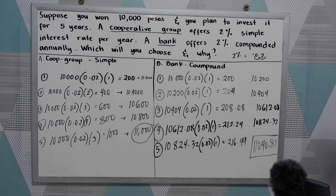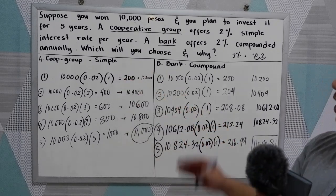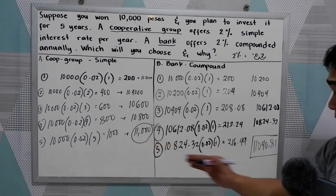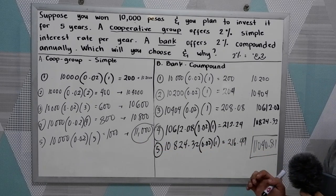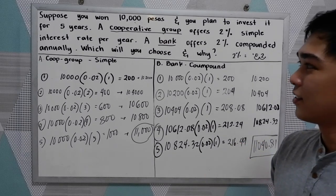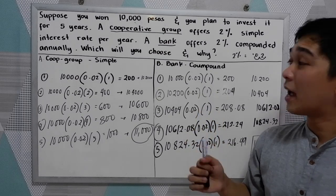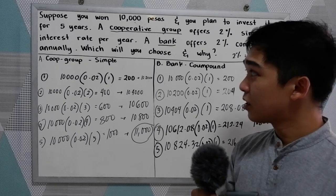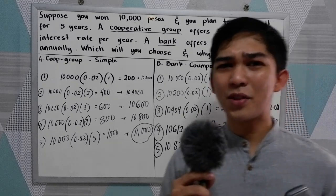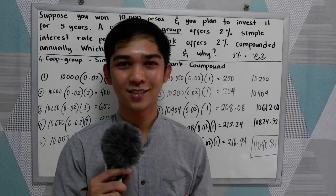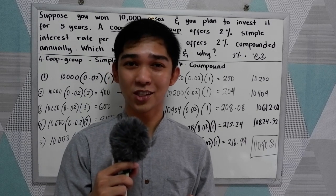Let's compare the two: the co-op group with simple interest gives 11,000, while the bank with 2% compounded annually gives 11,040.81 — a difference of about 40 pesos. So if you're going to choose, you would choose the bank with compound interest over the co-op group with simple interest. That is the comparison between simple interest and compound interest. Thank you for watching Senior Pablo TV.